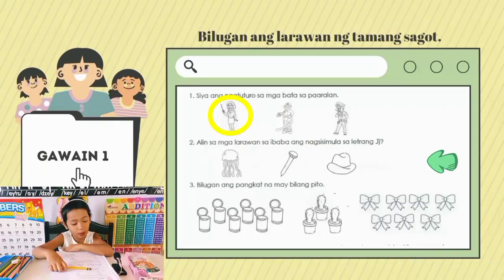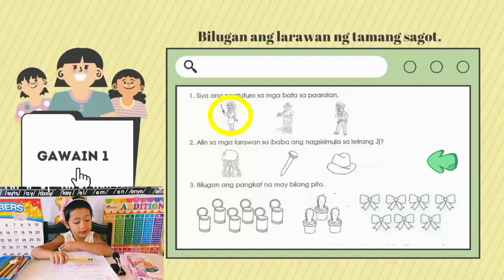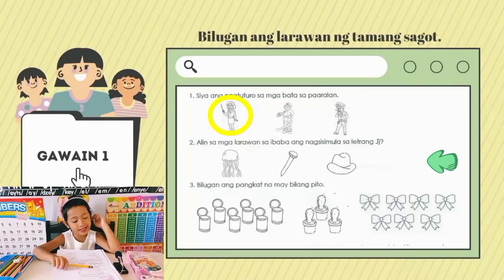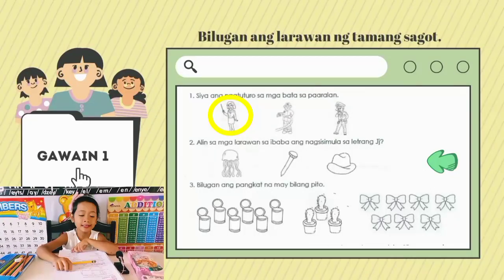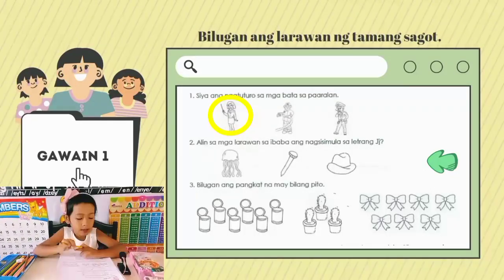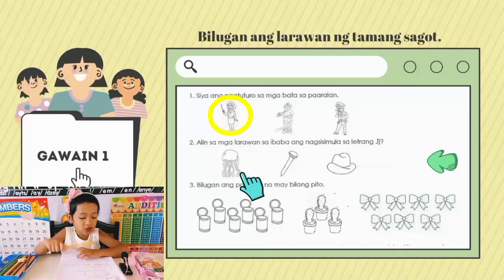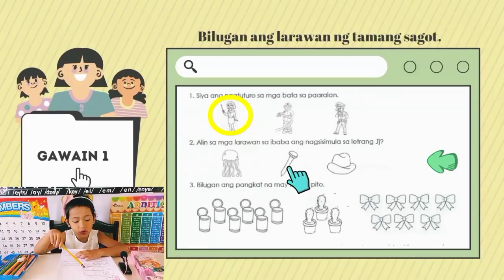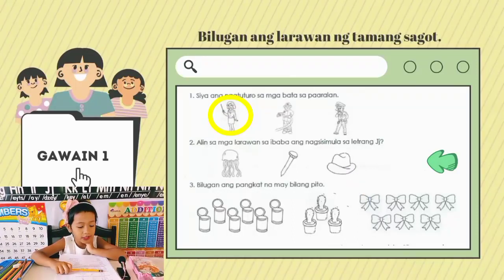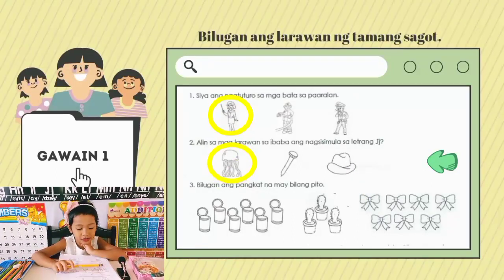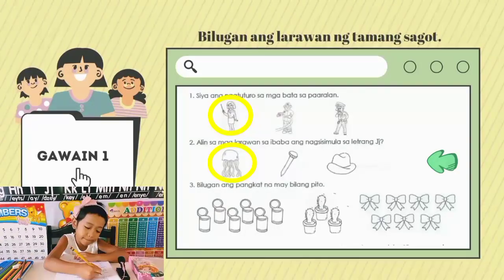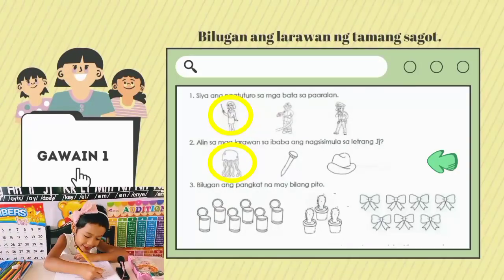Bilang dalawa: alin sa mga larawan ang nagsisimula sa letrang J? Meron ditong jellyfish, ako, at sombrero. Siyempre, ang tamang sagot ay jellyfish — nagsisimula sa letrang J, na may tunog na J. Bilugan na natin.